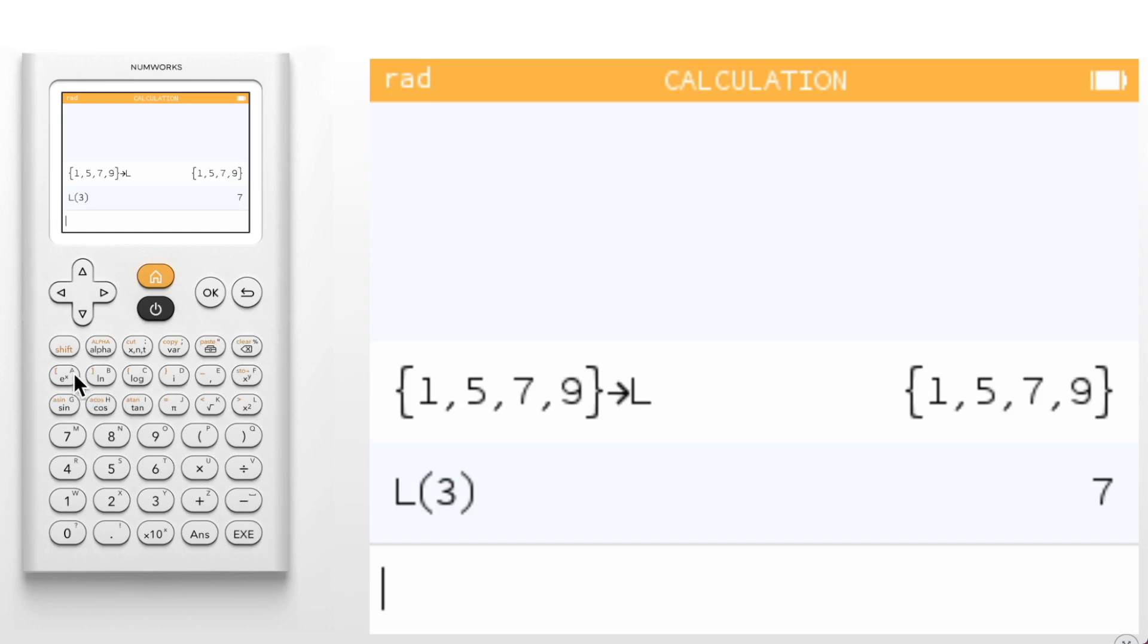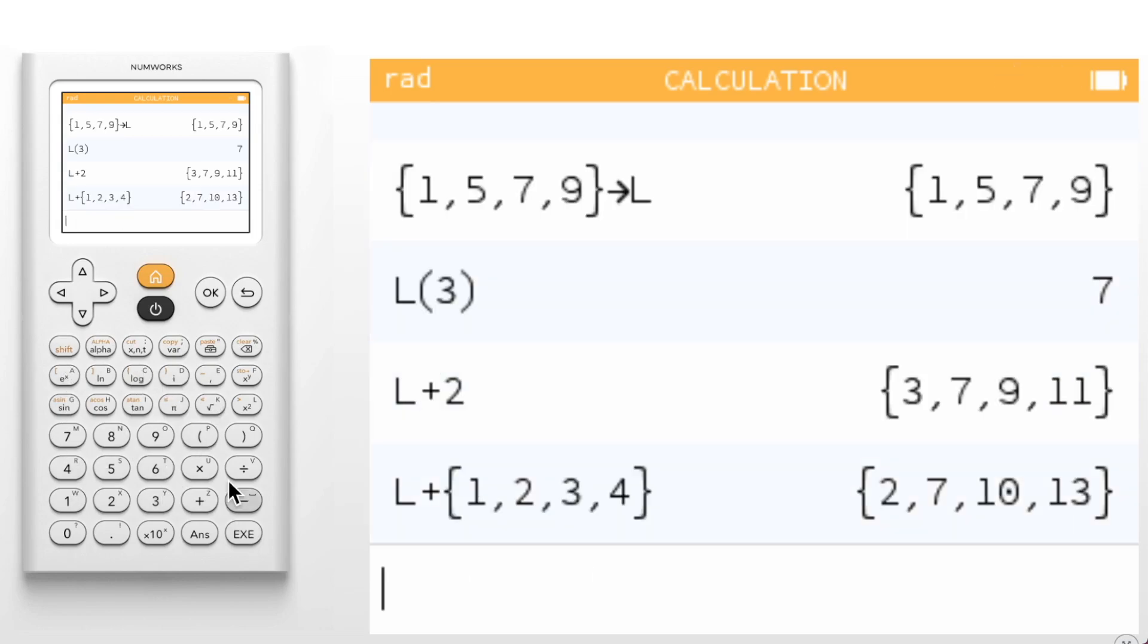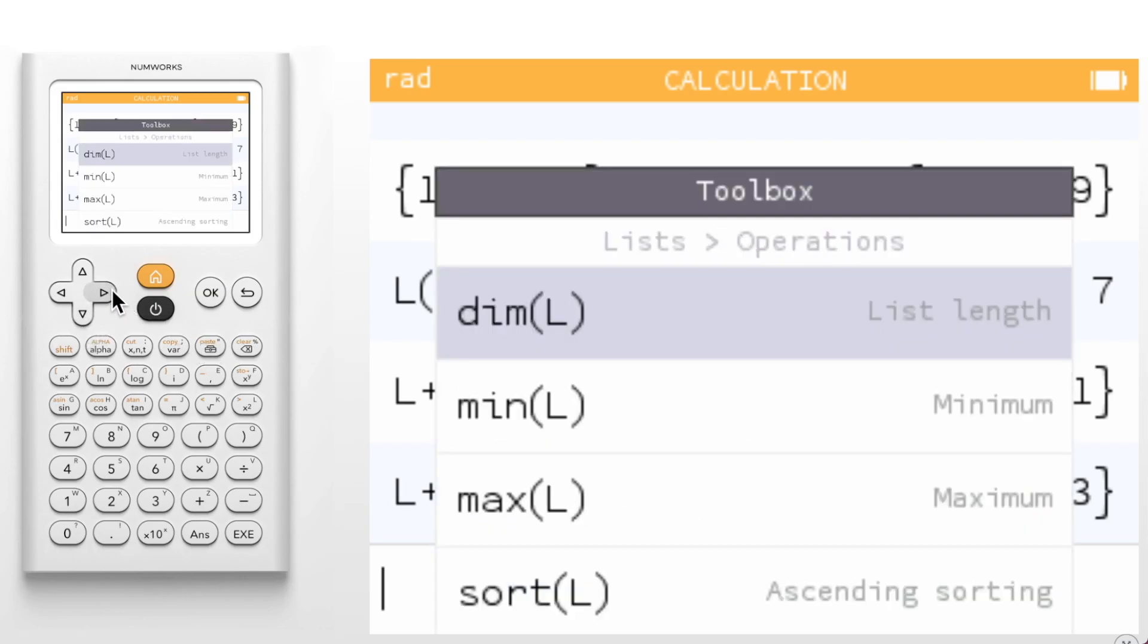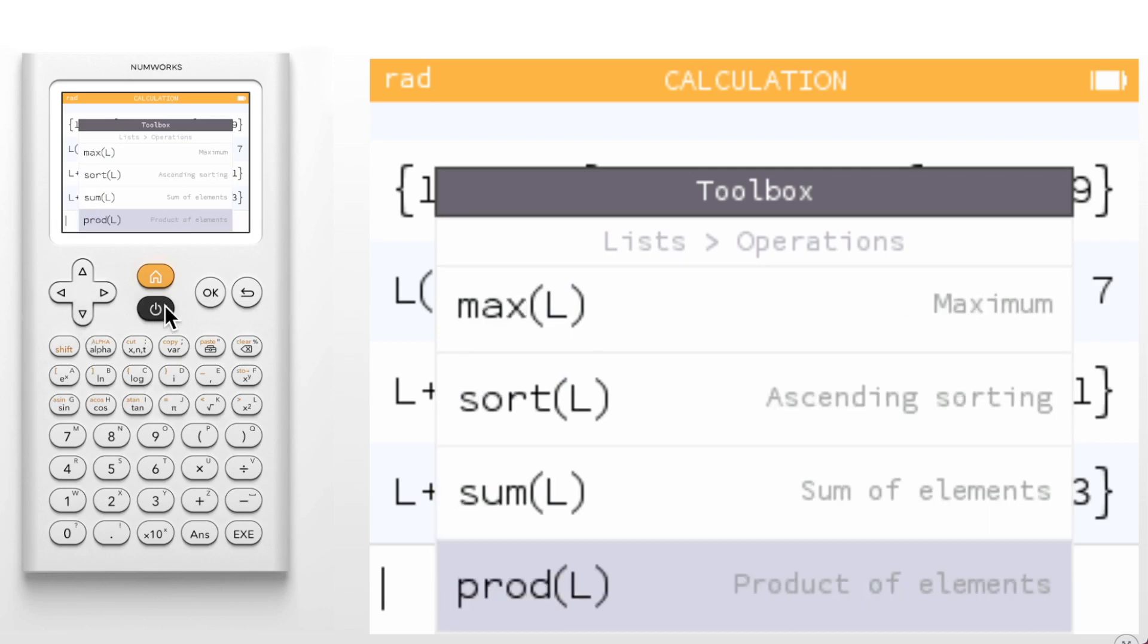We can add a value to each element of our list. And we can add the elements of two lists together if they are the same size. There are also list operations and statistics within the toolbox. We can determine the length, minimum, and maximum values of the list, sort the list, and find the sum and product of the elements of the list.